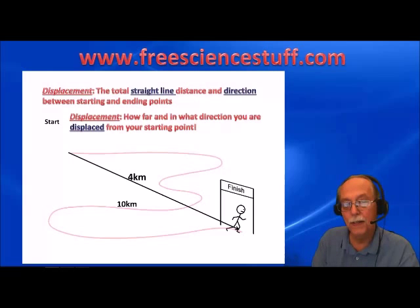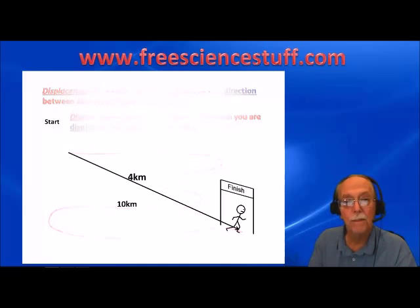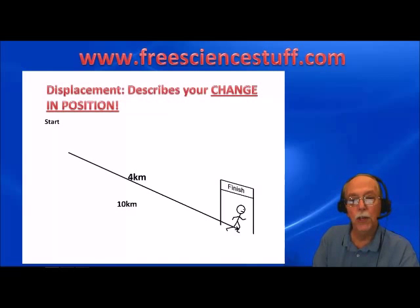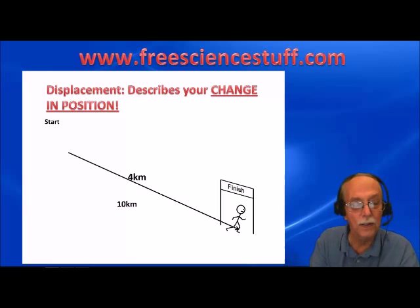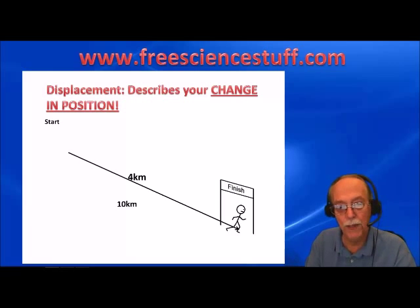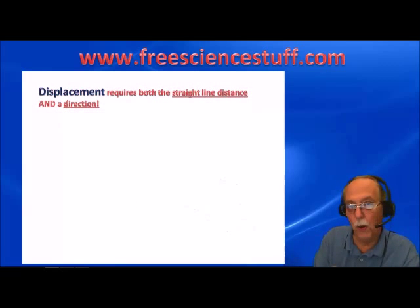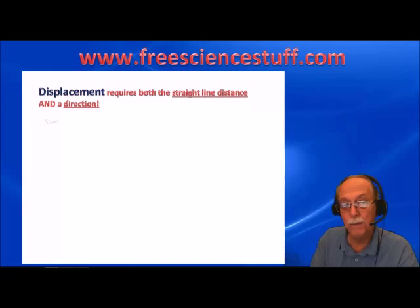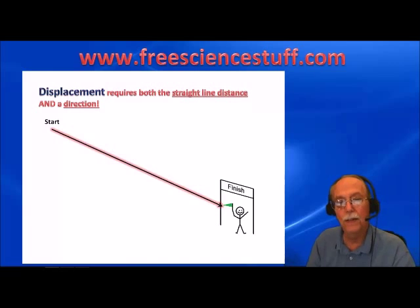Displacement can show you how far and in what direction you have been displaced from your starting point. It can describe your change in position — he started at the starting point and wound up at the finish line. Displacement requires both a straight line distance and a direction.